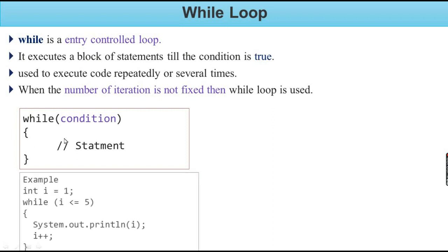Let's see with an example. We declare a variable: `int i = 1`. The variable is declared and a value is assigned to it. Now, `while(i <= 5)` — this condition expression always returns either true or false. Right now it is true.